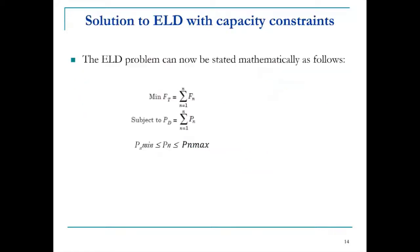Now applying capacity constraints: each generating unit has minimum and maximum capacity limits. The ELD problem with constraints is defined as: Minimize Ft = ΣFn, subject to Pn_min ≤ Pn ≤ Pn_max.